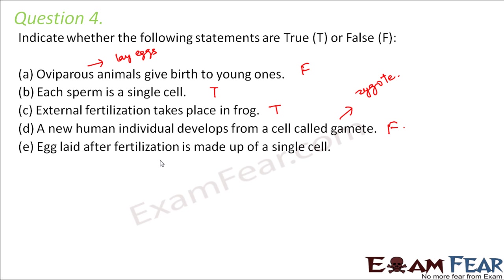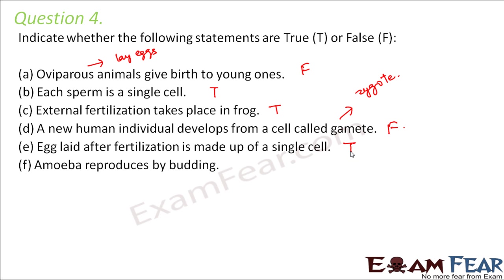Egg laid after fertilization is made up of a single cell — this is true, because after fertilization a zygote is formed and a zygote is made up of a single cell. Amoeba reproduces by budding — this is false, because amoeba reproduces by fission, not budding. Animals that reproduce by budding would be hydra and yeast.